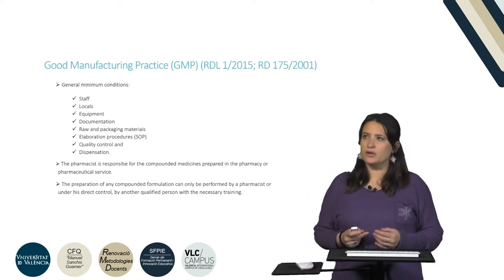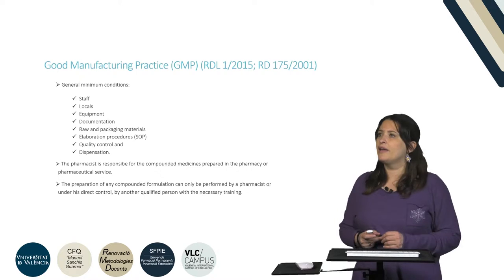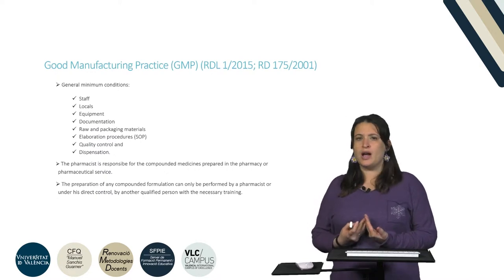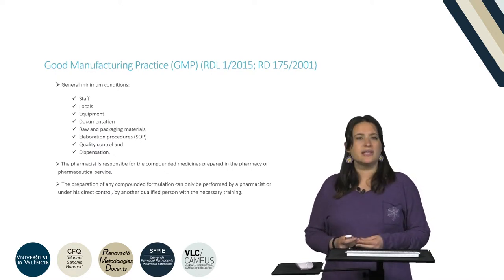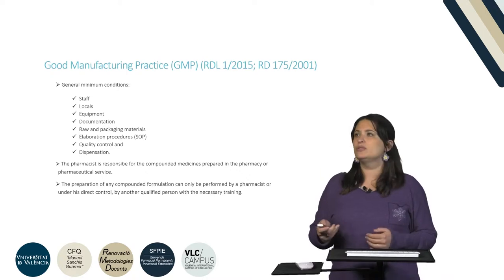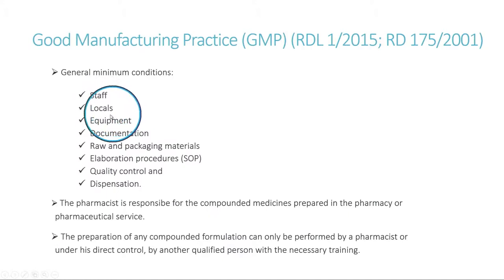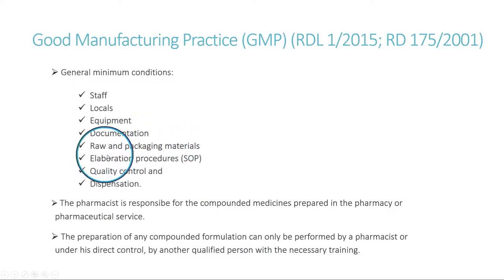GMPs are the so-called good manufacturing practice and are legal requirements that we have to follow to prepare our formulations in the lab. They relate to general minimum conditions regarding not only the manipulation process of the medicines that we will prepare — the compounded formulations — but also general terms such as the staff, the local requirements, the equipment that we have in the lab, the documents we have to fill in, the raw and packaging materials, and also the SOPs or the elaboration procedures.